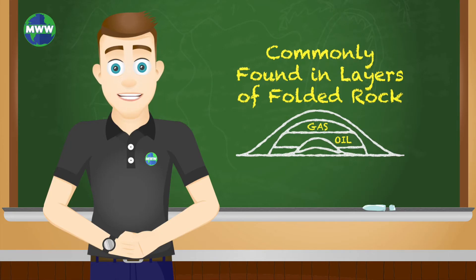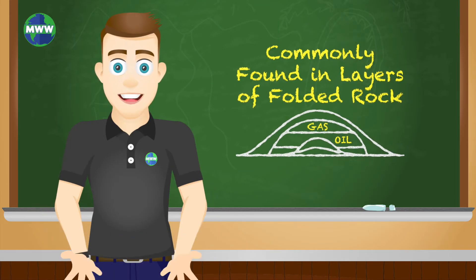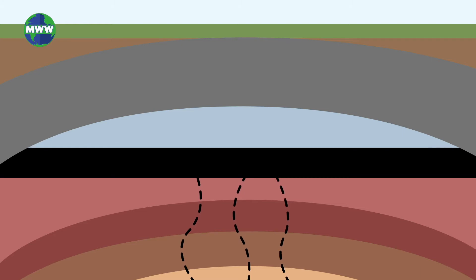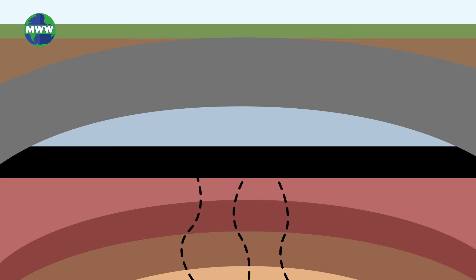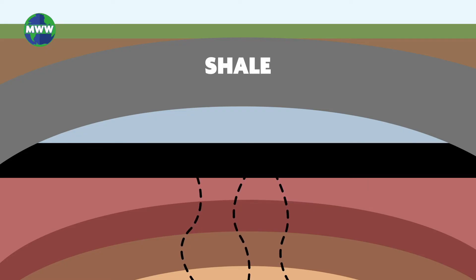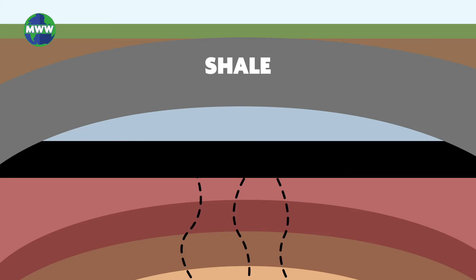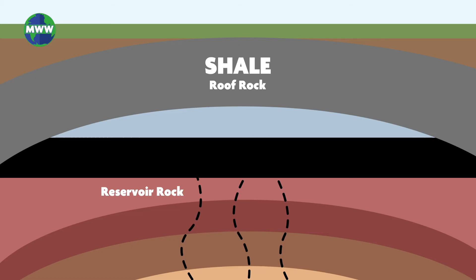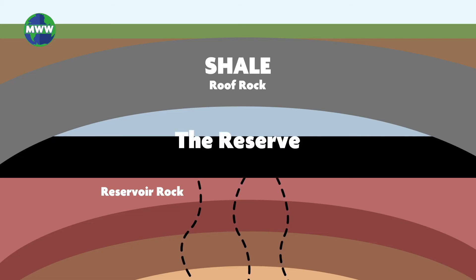Oil and gas are most commonly found together in layers of folded rock. They are less dense than water, so they are forced upward in the crust, moving through permeable rock. Eventually, they are stopped by an impermeable rock, such as shale. This shale layer traps the oil and natural gas below it and is referred to as the roof rock. The rock below the oil and gas is called the reservoir rock. These hydrocarbon traps that form are called reserves.